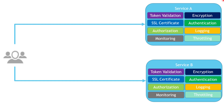Looking at some of the features here like authentication and authorization, some of you are probably already thinking of Azure services we can leverage to offload these two features from our services and put them in other Azure services instead — and this is what this pattern is about. Some features could be shared across all services in our system, or some features could be so specialized that it would be better to offload them to more specialized services, using Azure or AWS out-of-the-box features, freeing our services to focus on the main business logic.